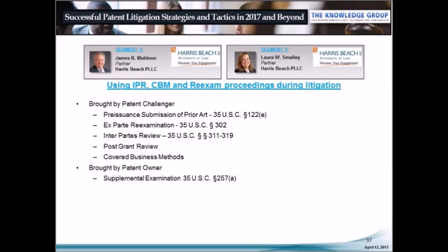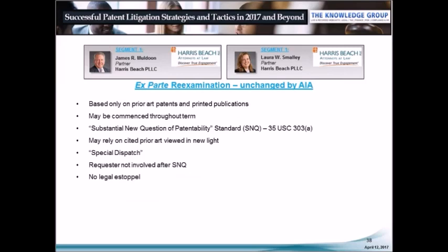PTAB proceedings have been around for at least five years since the introduction of the AIA. Ex parte reexamination is unchanged and must be based on prior art patents and printed publications. The standard is whether the petition raises a substantial new question of patentability. After the reexamination is initiated, the requester is not involved. There is no legal estoppel effect, so a party in infringement litigation can initiate an ex parte reexamination at any time, regardless of having already lost on validity issues in district court.